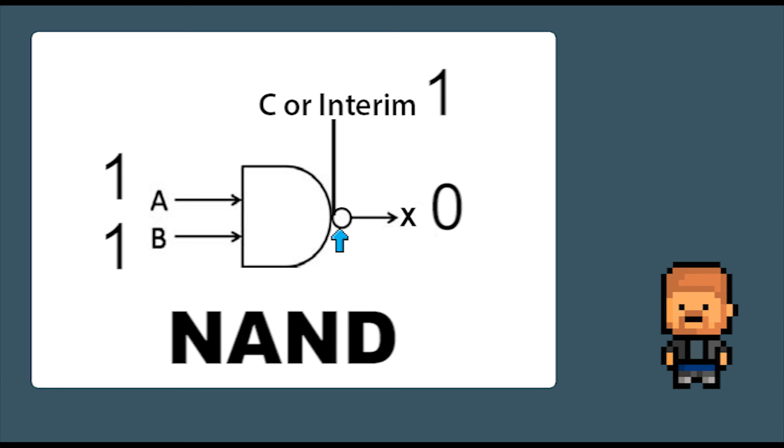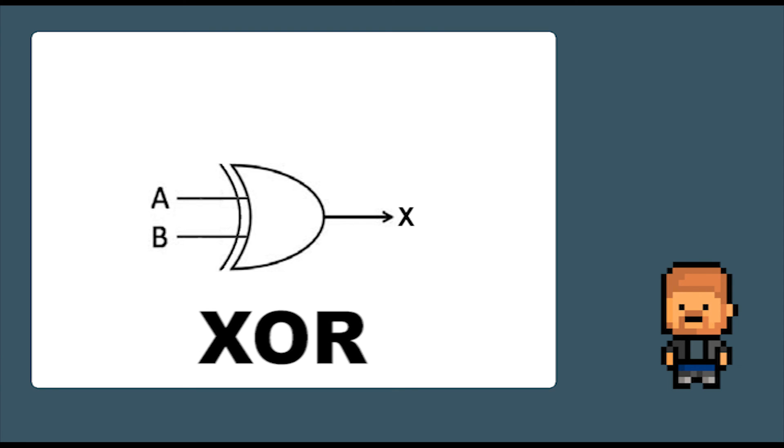Finally, we have the XOR, which is an exclusive OR. Unlike the normal OR gate, it is a bit more picky. It only wants one and not both of the inputs to be one. So if A is equal to one and B is equal to one, it will output a zero. But if A is equal to one and B is equal to zero, it will output a one to X.